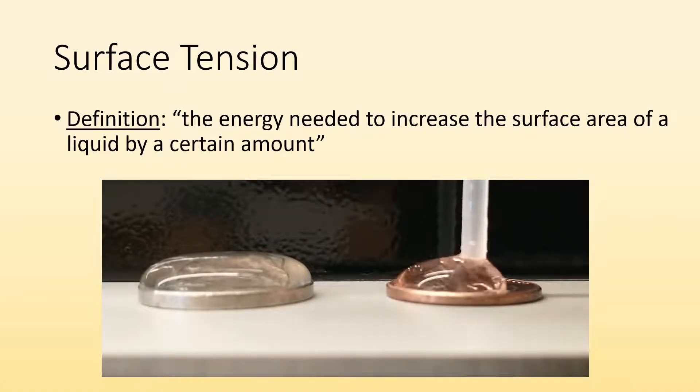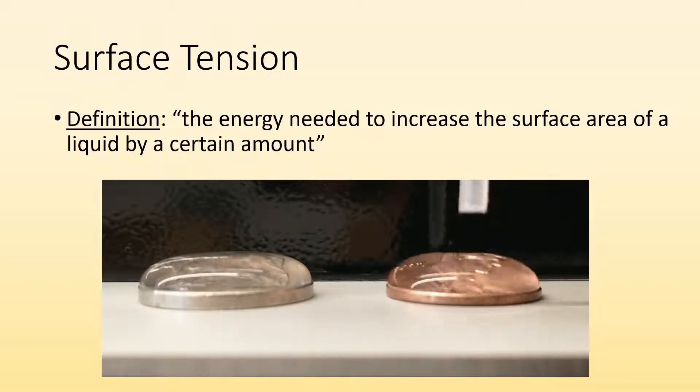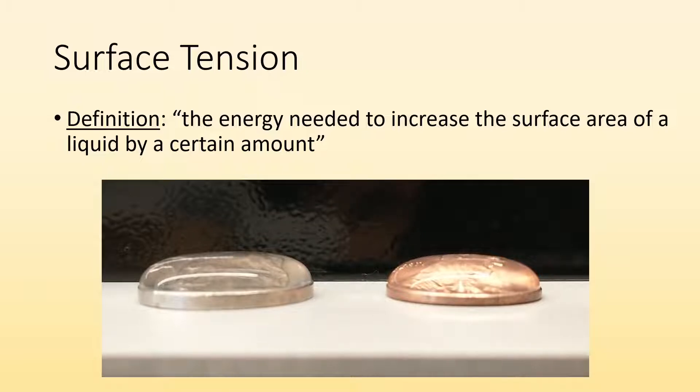The definition of surface tension is the energy needed to increase the surface area of a liquid by a certain amount. You can see it beads up. If we were to flatten it out, we'd be increasing the surface area and it would take a certain amount of energy to flatten that out.